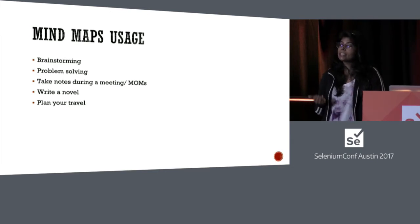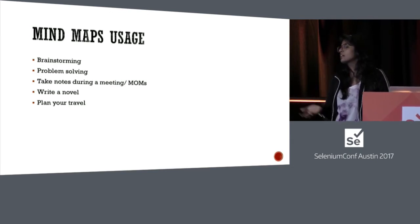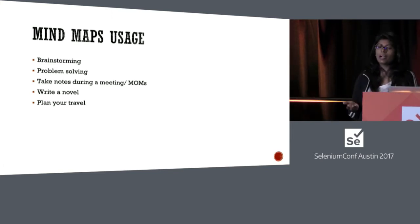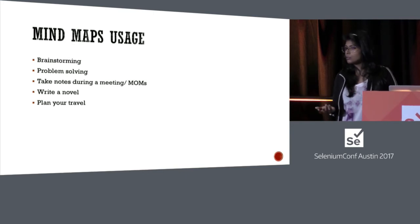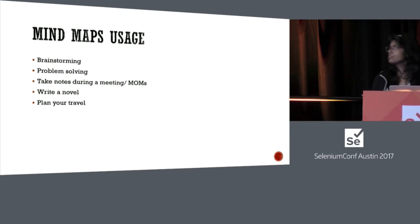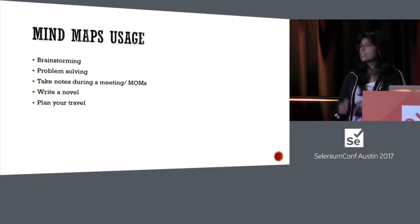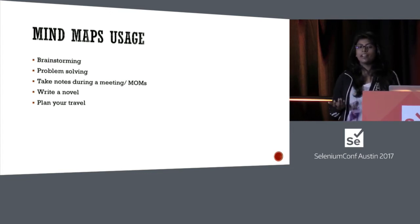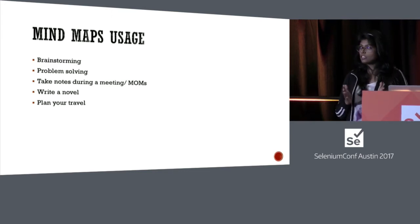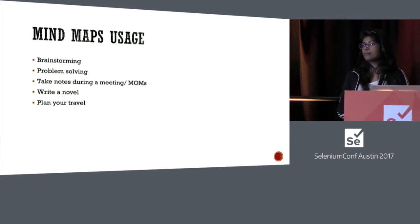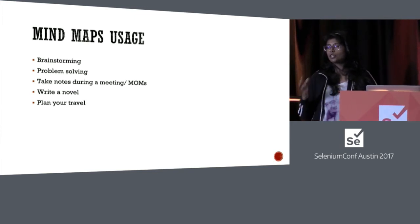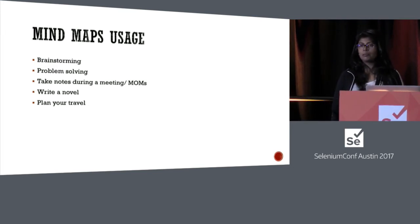You can also use mind maps for problem solving — have branches for what, when, where, how — which helps organize your thoughts and identify where you're lacking. You can also take meeting notes and send out MOMs as a mind map. Usually no one reads an MOM if it's in text paragraph format with 20 bullet points, but if you send it out as a mind map, everyone will be intrigued enough to go through it.